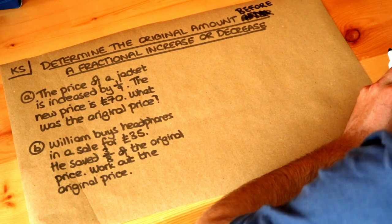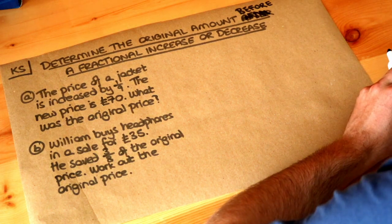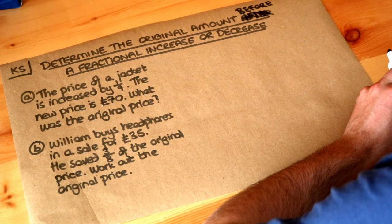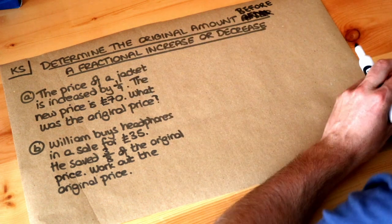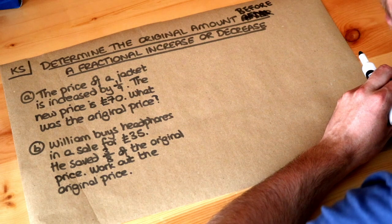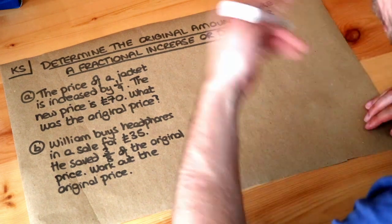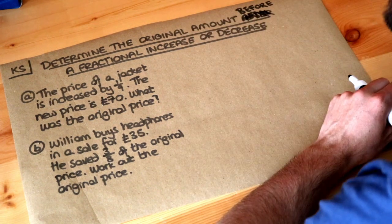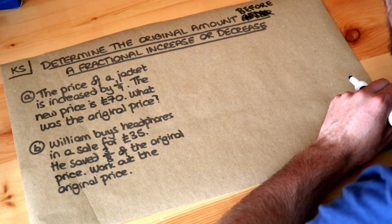Welcome to this Dr Frost video on determining the original amount before a fractional increase or decrease. The price of a jacket is increased by a ninth. The new price after the increase is £70. What was the original price?